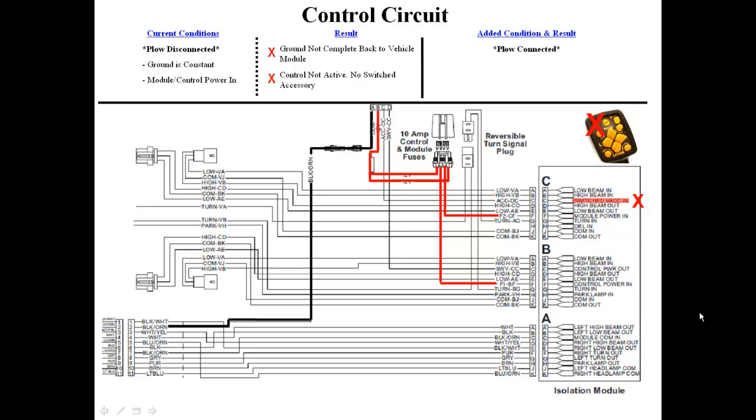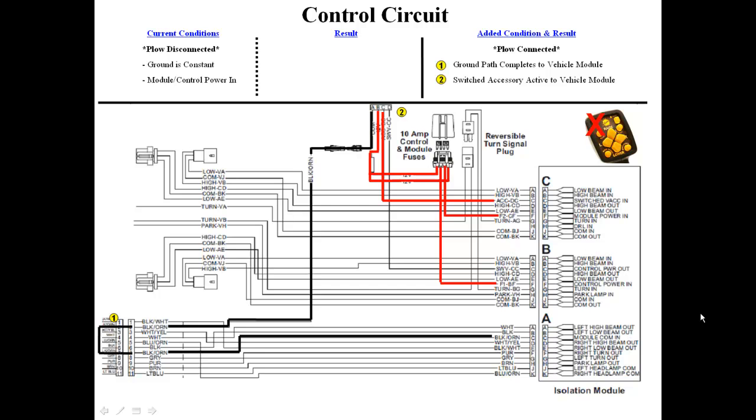The plow is now connected, and the 11-pin headland harness is plugged in, which completes the ground path to the isolation module on the black-orange wire. The switched accessory circuit is activated by turning on the keyed ignition.